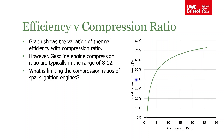I've plotted the ideal thermal efficiency versus compression ratio derived on the previous slides. You can see that as compression ratio increases, thermal efficiency keeps increasing, though it starts to plateau. So why do gasoline engines tend to have compression ratios only in the order of 8 to 12? Something must be limiting the compression ratio — what is it? Why don't we just use higher compression ratios to get higher efficiency?